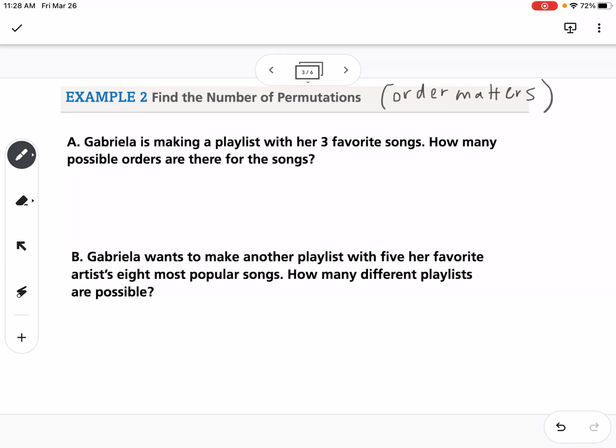Part A says Gabriela is making a playlist with her three favorite songs. How many possible orders are there for the songs? We could write out all the possibilities, but if she was making a playlist with 30 of her favorite songs, we wouldn't want to write out all the possibilities. So we can think of it as: we have the first song, the second song, and the third song.